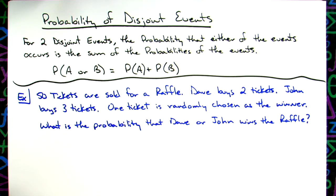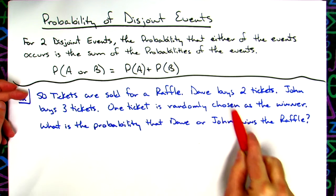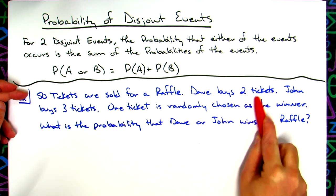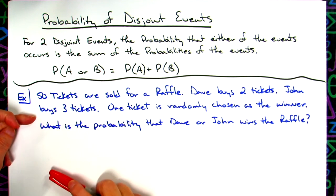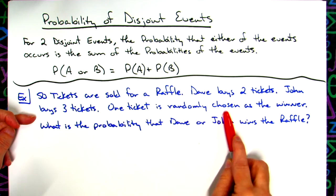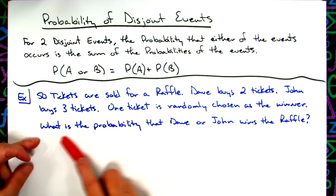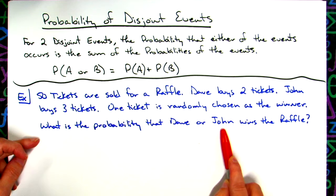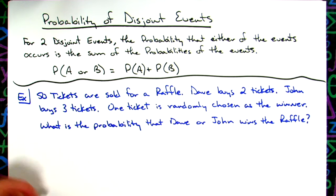So our example here: 50 tickets are sold for a raffle. Dave buys two tickets. John buys three tickets. One ticket is randomly chosen as the winner. What's the probability that Dave or John wins the raffle?